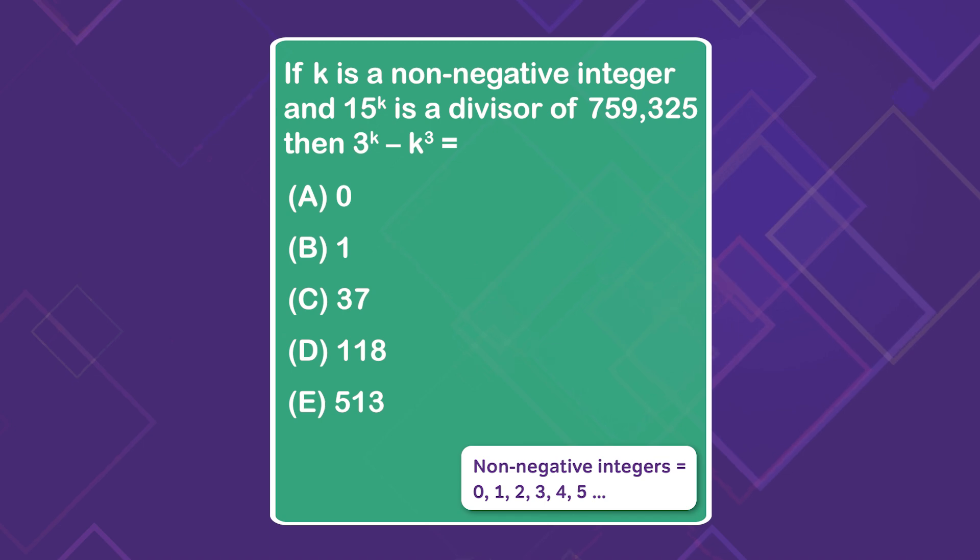Here we have a GMAT quant problem that we can practice together. It says if k is a non-negative integer and 15 to the k is a divisor of 759,325, then 3 to the k minus k to the third equals what. That might seem very overwhelming so we're going to break it down into bite-sized pieces.